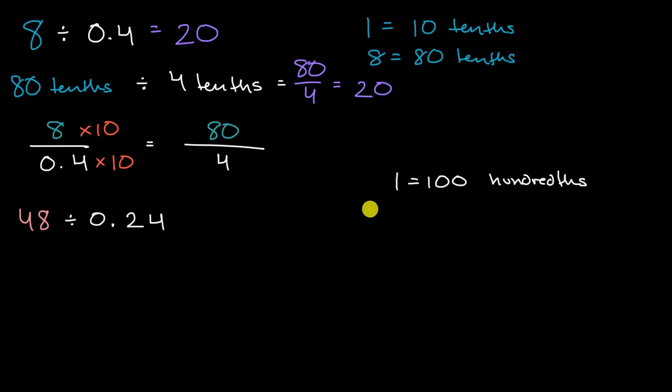So 48, so 48 is going to be equal to 48 times 100 hundredths. And maybe I'll just write it like that. Or you might be able to say, hey, that's 4,800 or 4,800 hundredths.